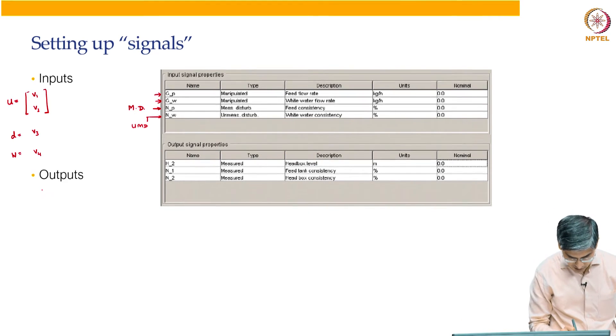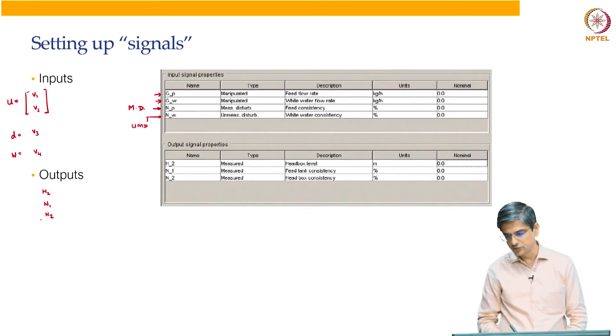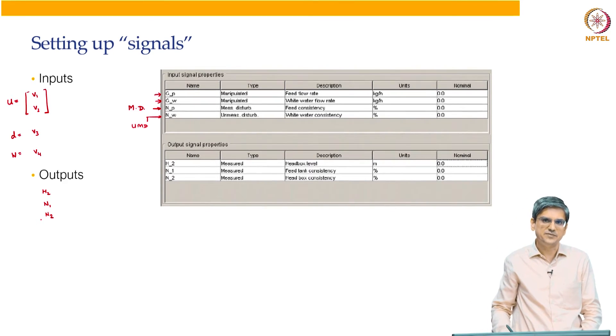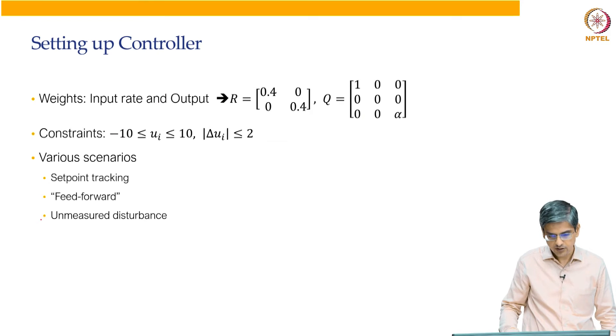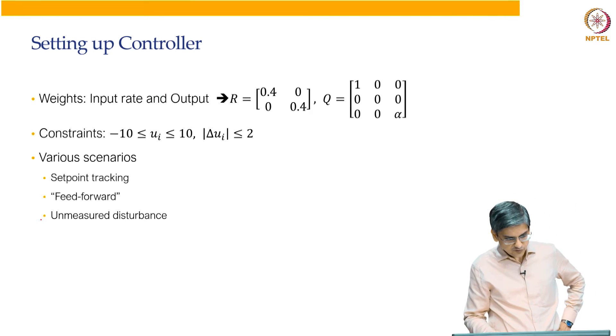The outputs, there are 3 outputs: H2, N1 and N2. Now, H2, N1 and N2, we can have them as controlled variables or we can have them as measured variables. All 3 of them are measured and 2 or 3 of them might be controlled depending on the choice.